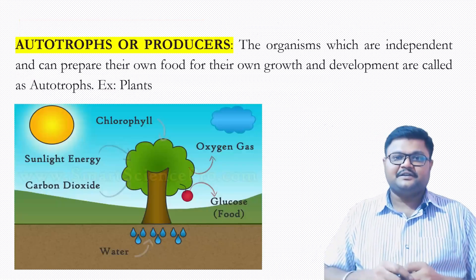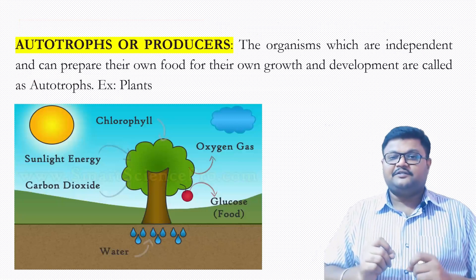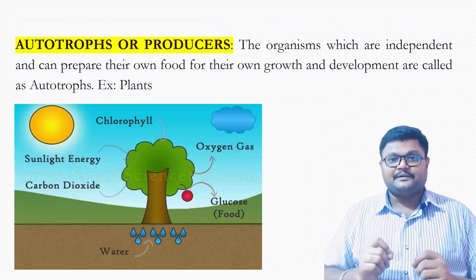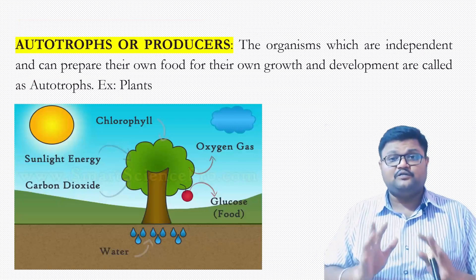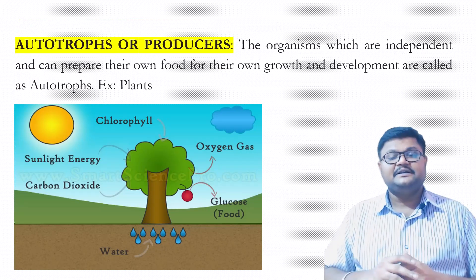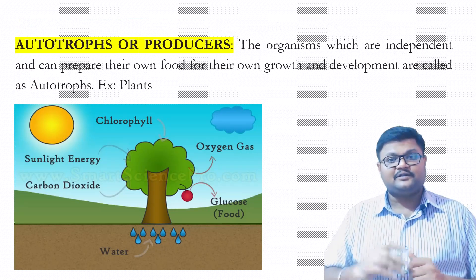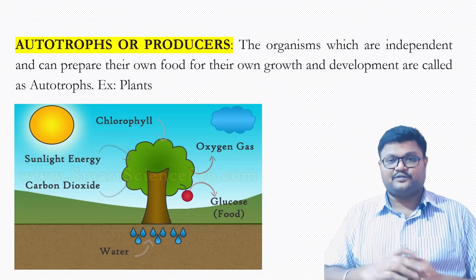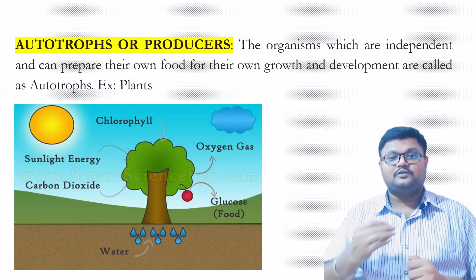The next definition is autotrophs. The organisms which can prepare their own food for their growth and development are called autotrophs. 'Auto' means self.